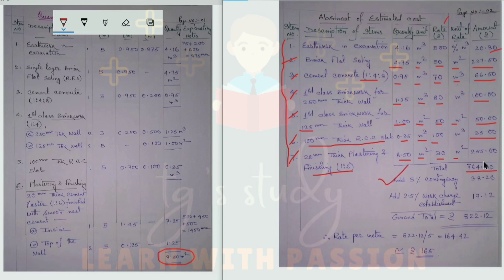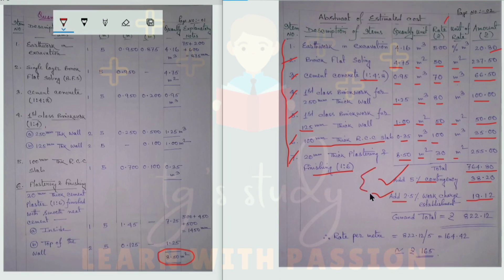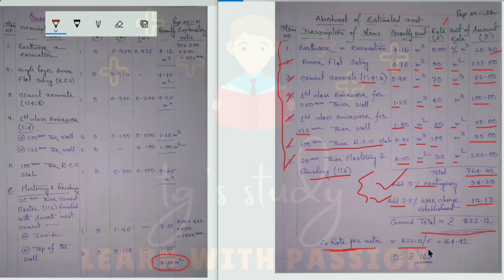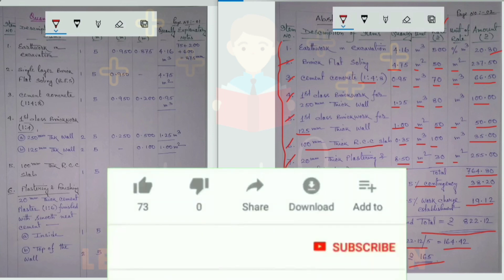Now we add 5% contingency. The total amount including contingency and work-charge establishment is calculated. The 7 items total 1884. With 5% contingency added, this gives the final estimated cost for 5 meters length of the surface drain. If you found this helpful, please share and subscribe to our channel. Thank you!